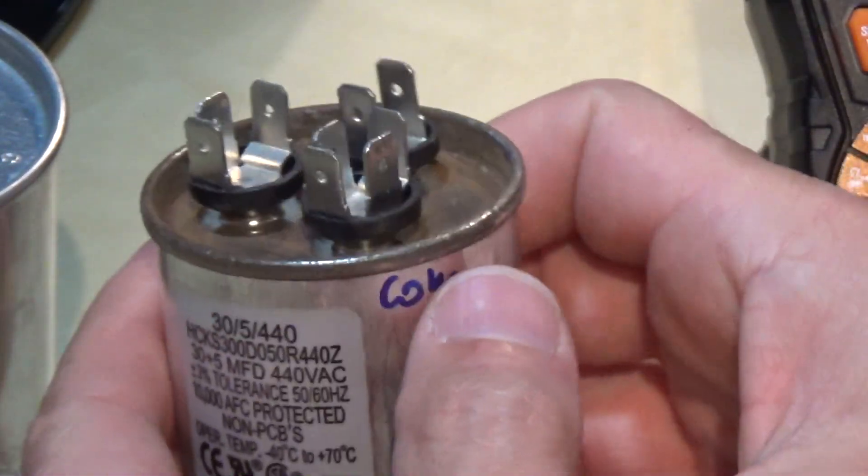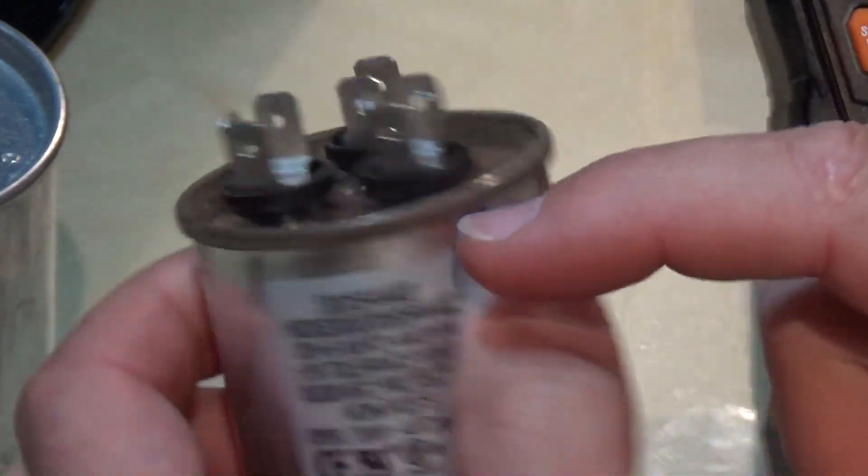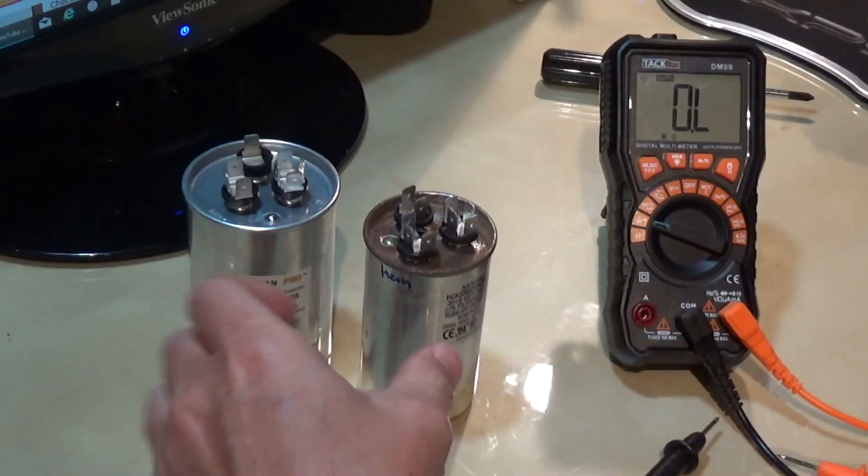How to check it? You check between common and fan, and common and herm. There are two ways of checking that.